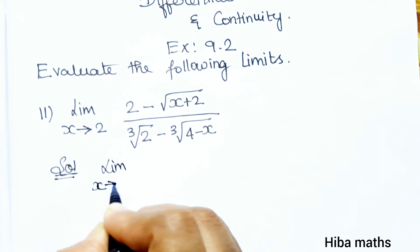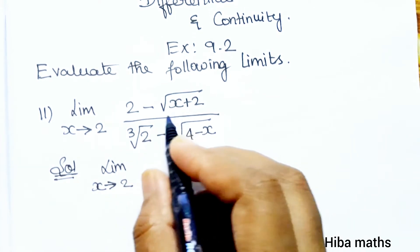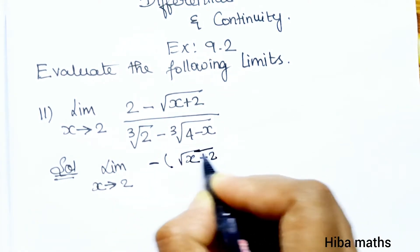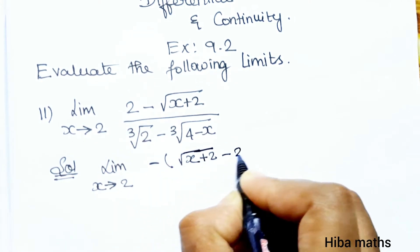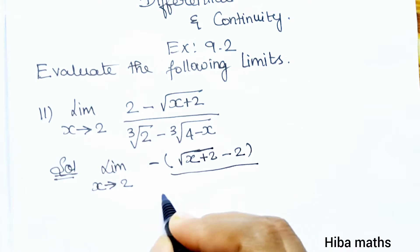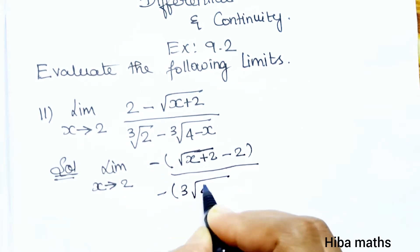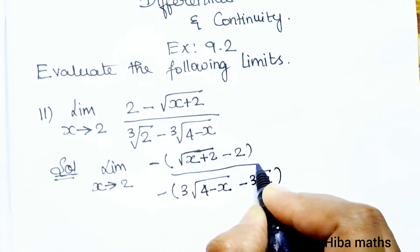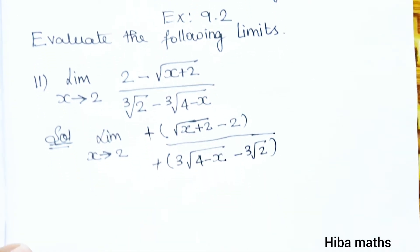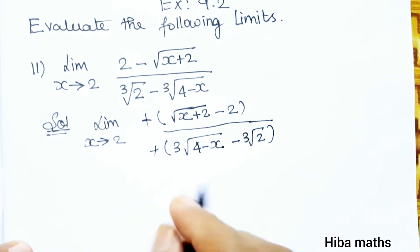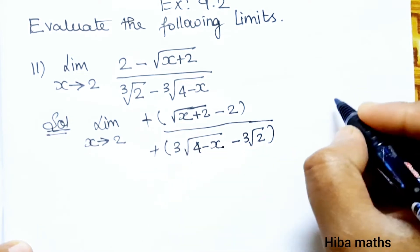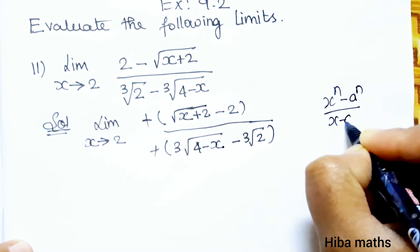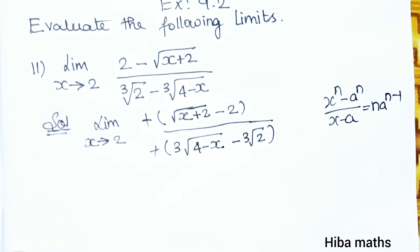Solution: limit x tends to 2. We will solve this using the rule x power n minus a power n, divided by x minus a, in the standard format. Let's change the power form accordingly.